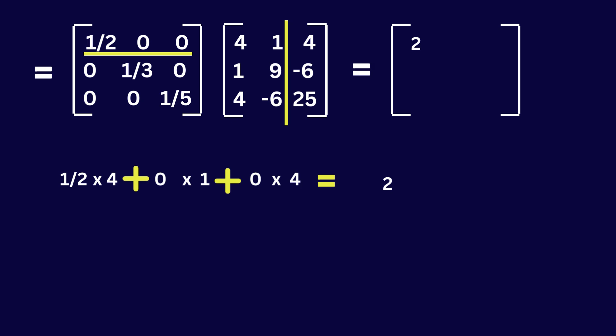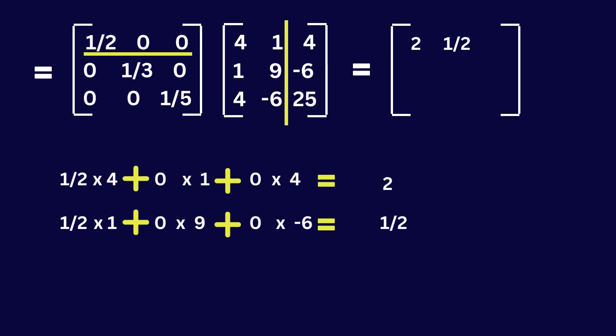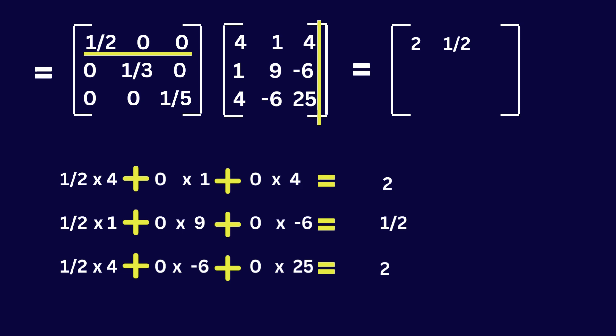Now consider the first row of the first matrix and the second column of the second matrix: 1 over 2 multiplied by 1 is 1 over 2, so the overall answer is 1 over 2 — I will put 1 over 2 here. Now consider the first row of the first matrix and the third column of the second matrix: the overall answer is 1 over 2.